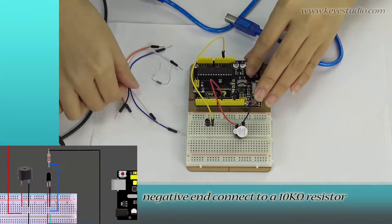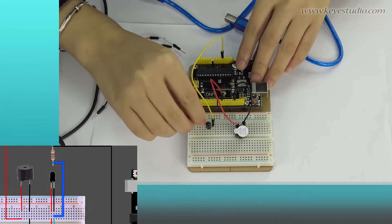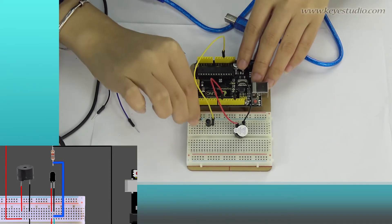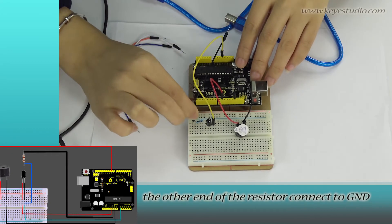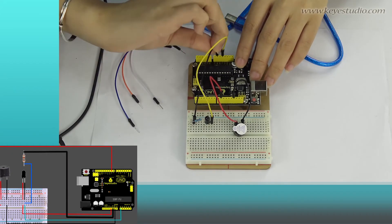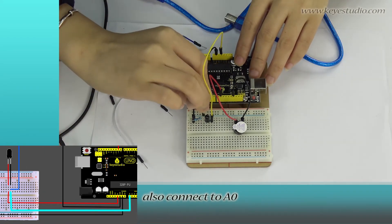Negative end connect to a 10K ohm resistor. The other end of the resistor connects to ground. The negative end of the flame sensor also connects to A0.